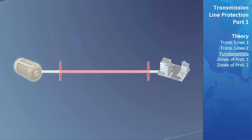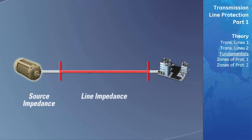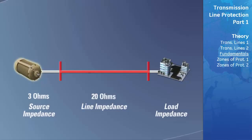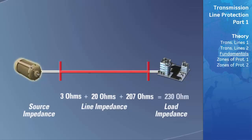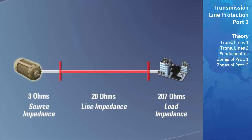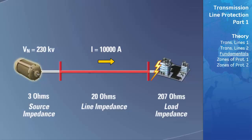Each component in a power system, whether it is a source, a transmission line, or a load, has an impedance. This total system impedance limits the magnitude of current that will flow through the power system. In the power system seen here, we have a total system impedance of 230 ohms. If the source were generating power at 230 kilovolts phase to neutral, 1,000 amps of current would be supplied to our load. If a fault were to occur in a location that would cut off the path of current flow to the load, the total impedance would change to only 23 ohms.